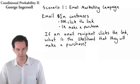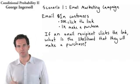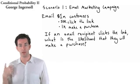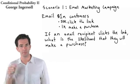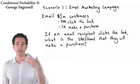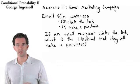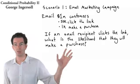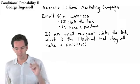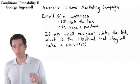Still looking at conditional probability. Here's our first scenario. You are running an email marketing campaign, and you begin by emailing 1 million customers. Of those 1 million that you email, 50,000 click the link in your email. And among those, 1,000 actually make a purchase based on this email campaign. The question is: if an email recipient clicks the link, what is the likelihood that they will make a purchase?